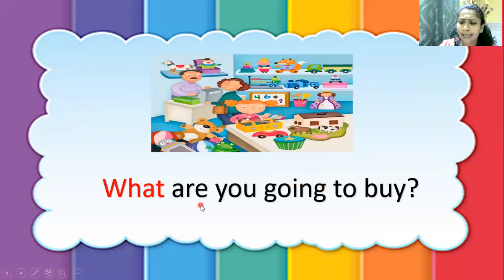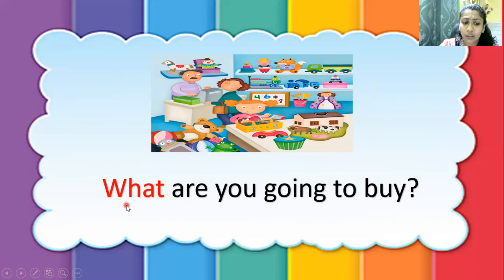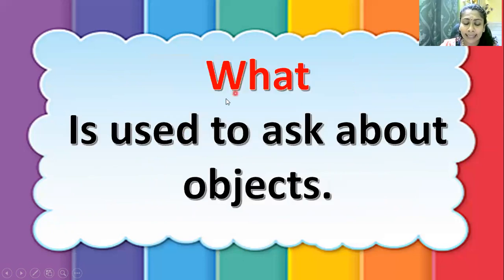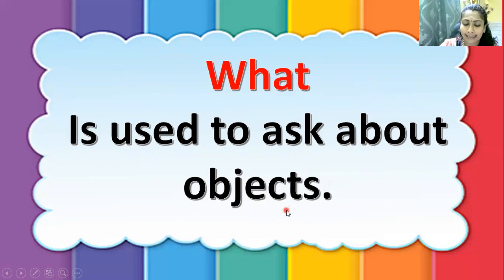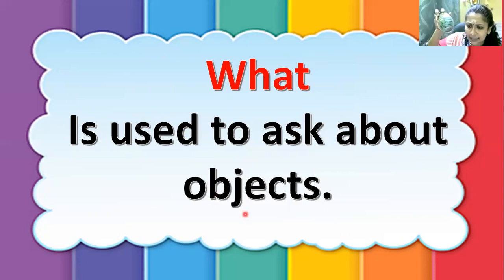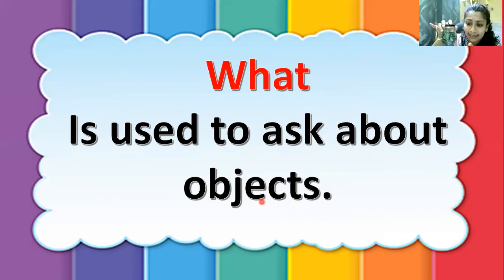Now I'm going to ask a question relating to things. What are you going to buy? When you have a question regarding things, you use the word 'what.' What, W-H-A-T, is used to ask about objects. Objects means things. So for example, I don't know what this is, so I ask: What is this? And you answer me: This is a bottle or a jar.